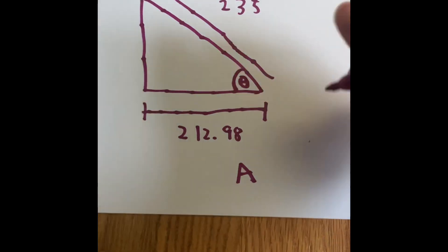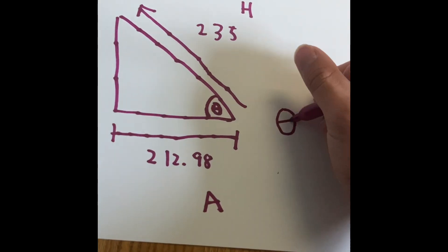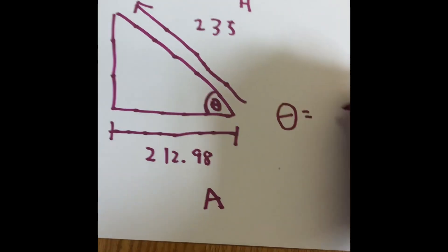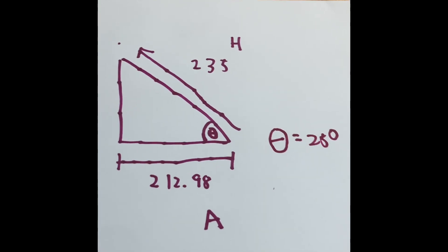So the superhero pointed up 25 degrees and flew up towards the sky. So theta, or our missing angle, is 25 degrees. That is how we solve this problem.